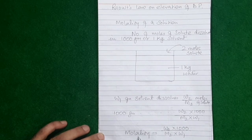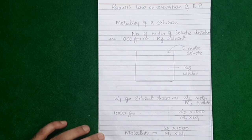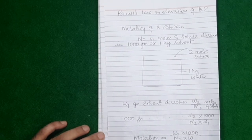We have only masses, and masses won't change with change in temperature. So if you express the concentration of a solution in molality at 10 degrees and then look at it at 20 degrees, it won't differ — because molality does not depend on temperature. It is a temperature-independent concentration term. That's why we need it.